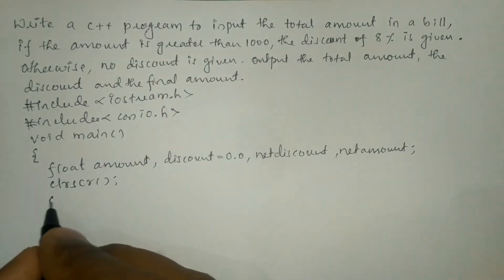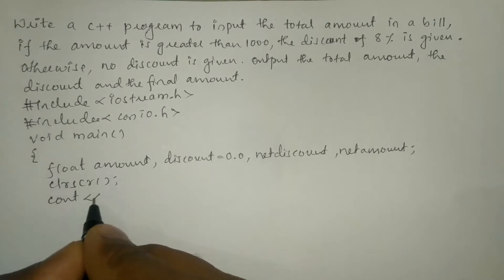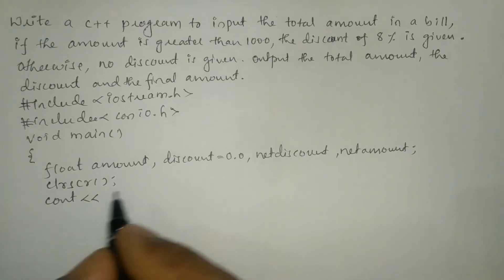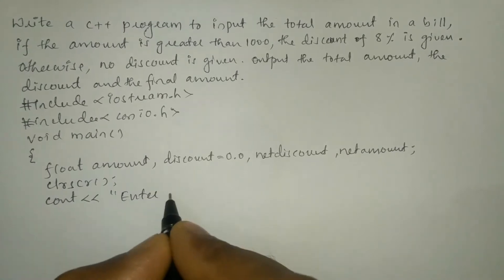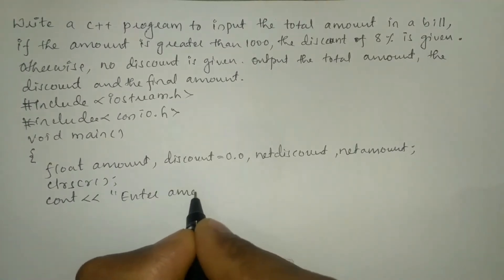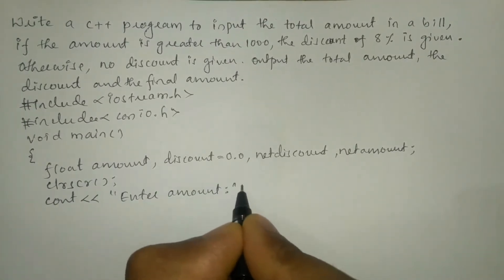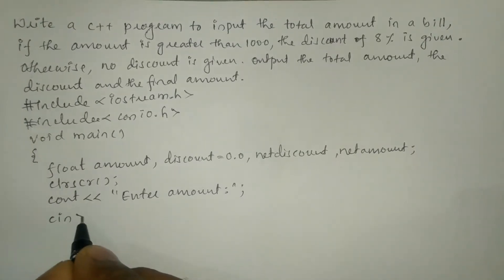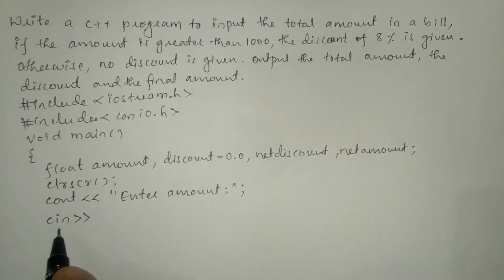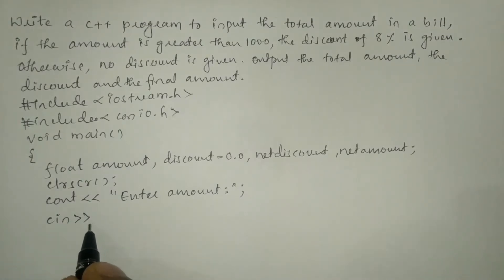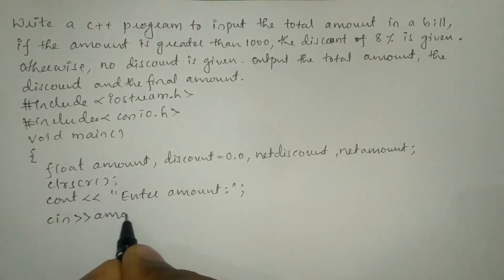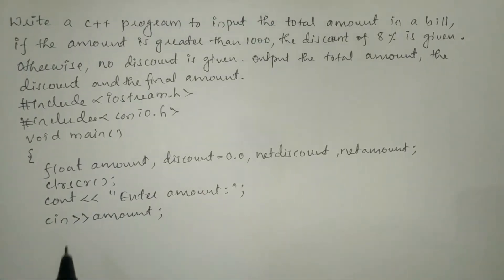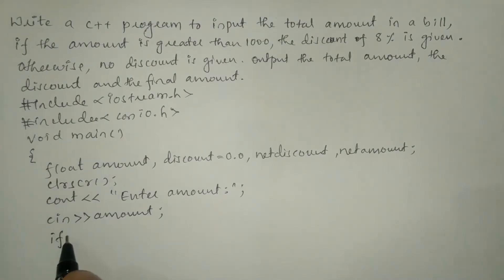We'll ask the user to enter the amount using a cout statement with the stream insertion operator: cout << "Enter amount"; and a semicolon. We will receive the input from the user through the keyboard using a cin statement with the stream extraction operator: cin >> amount; and a semicolon. Now we are going to check the condition.